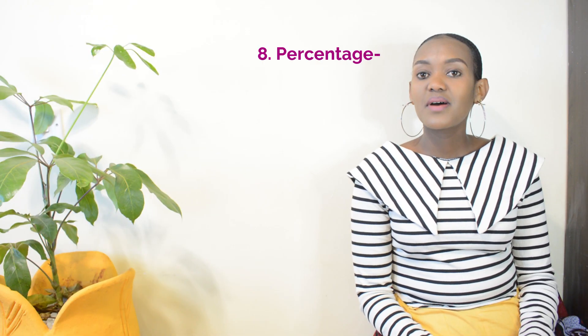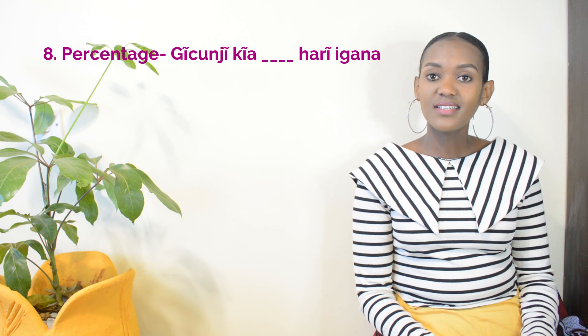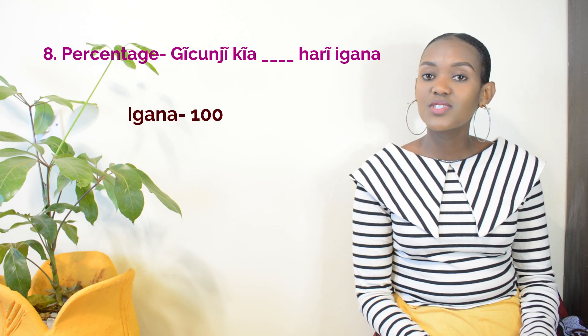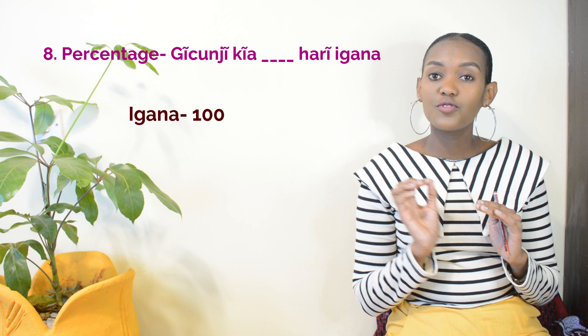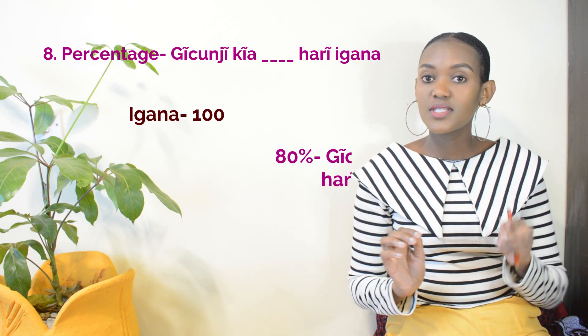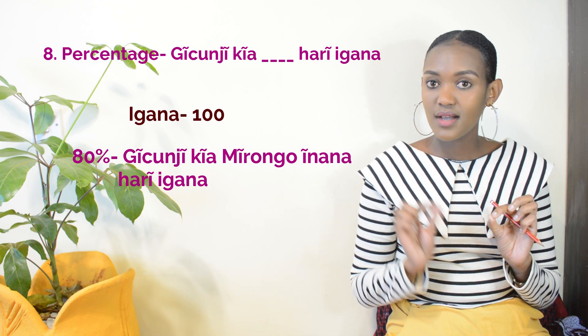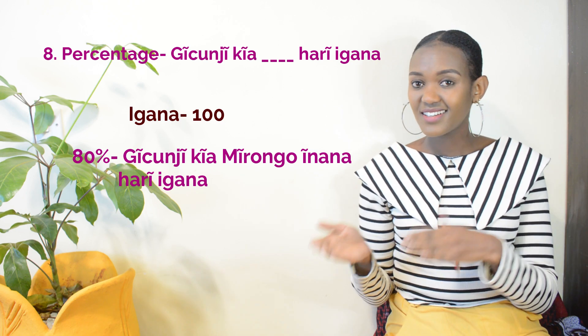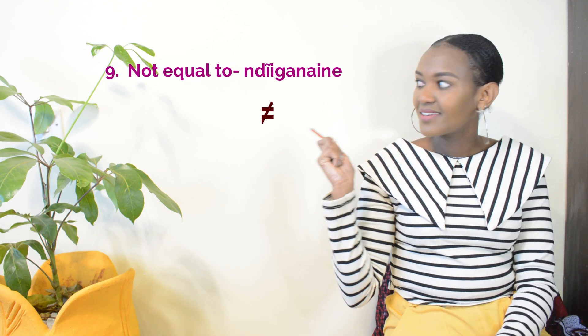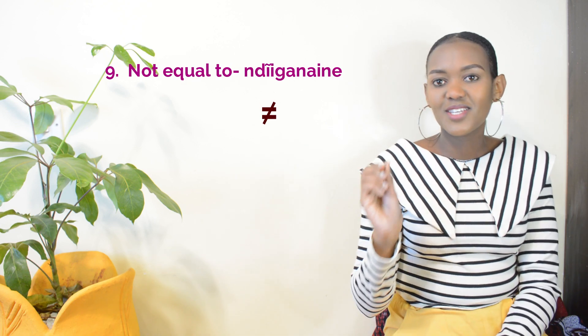The other sign we have is percentage. Percentage we say 'yesu je kia' — dash — 'hare igana'. If we had 80%, we say 'yesu je kia mirongwe nana hare igana'. 10% would be 'yesu je kia ikomi hare igana'.